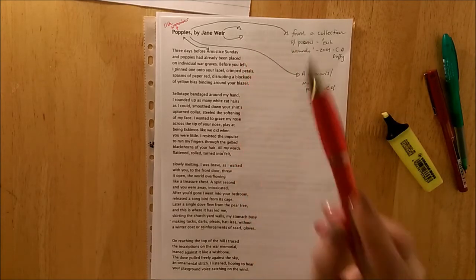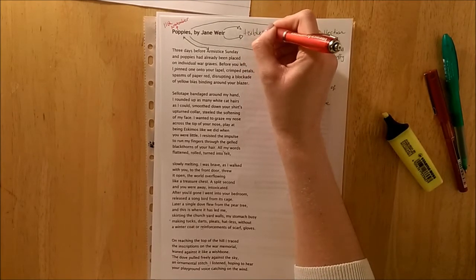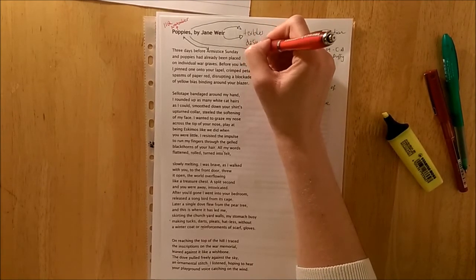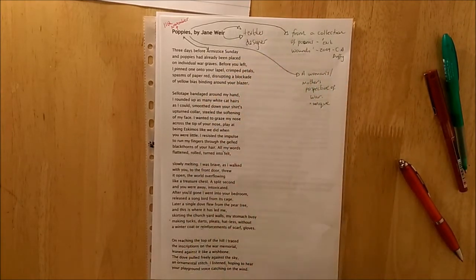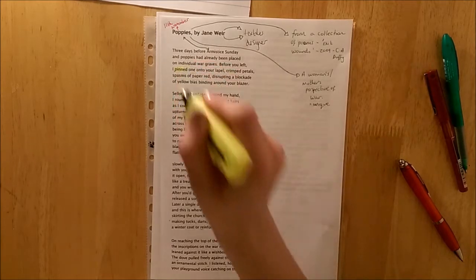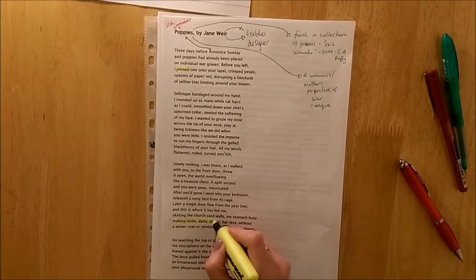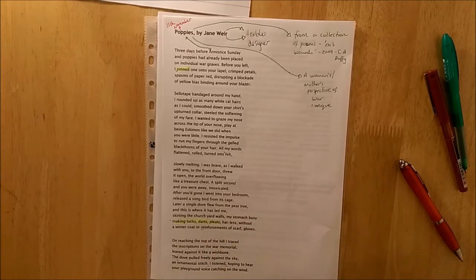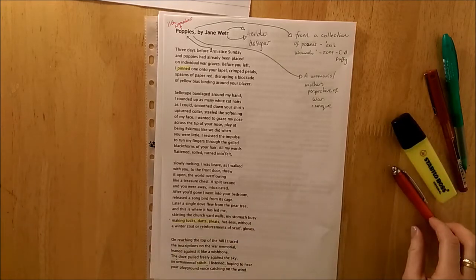We also know about Jane Weir that she was a textiles designer and this has influenced her writing. So as you can see, or as you already know, throughout the poem, there's a lexical group of textiles: pinned, making tucks, scarves, pleats. Anyone who does textiles will be much more familiar with this. An ornamental stitch, all of these words we can link to her and her hobby, profession as a textile designer.